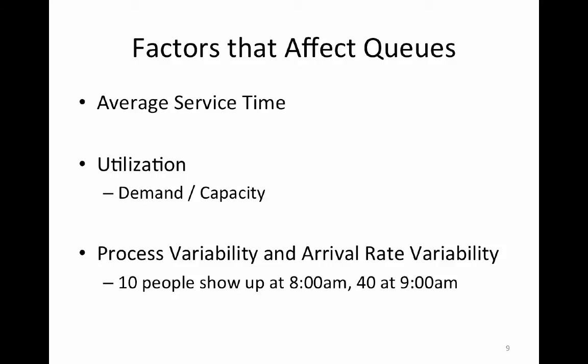If 10 people show up at 8 but 40 show up at 9, I hope you can staff accordingly. But if you have 10 show up today at 8 and tomorrow you have 30, that's problematic as well. As best we can, we want to measure the arrival rates, measure the process rates, and see if there is consistent variability — for example, on Mondays we have 10 people show up at 8, but on Tuesdays we have on average 30.